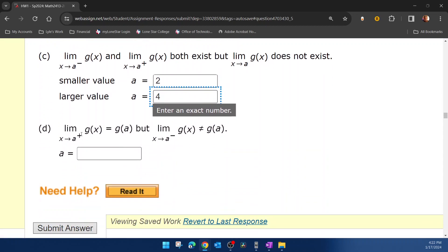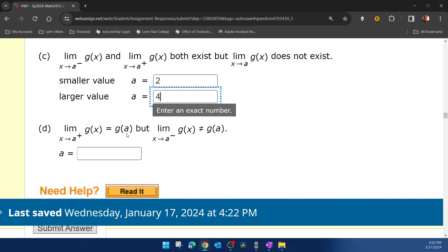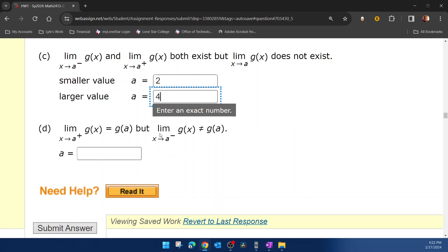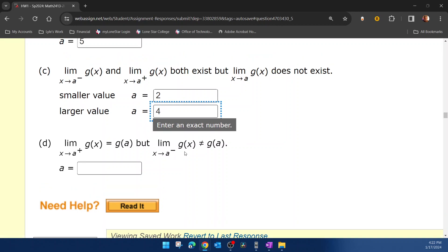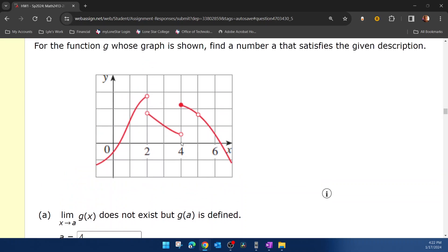Part d, the limit as x approaches a from the right is the same as the function value, but the limit as x approaches a from the left is not equal to the function value. And that again has to be 4 because if we come in towards x equal 4 from the right, the height that we're approaching is what the function value is.